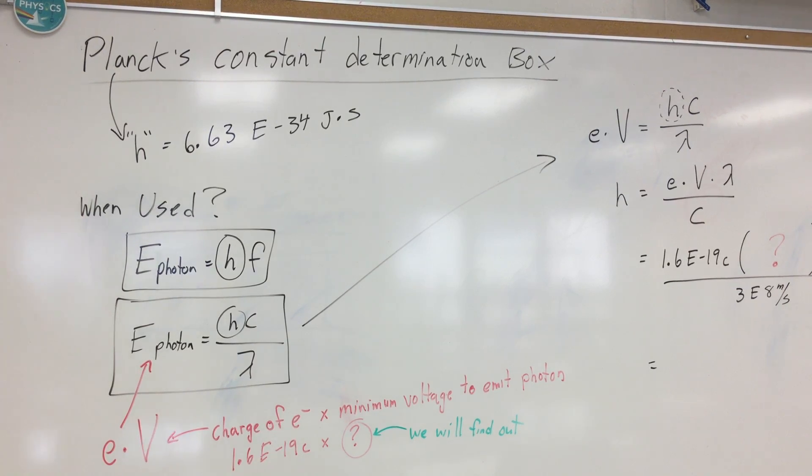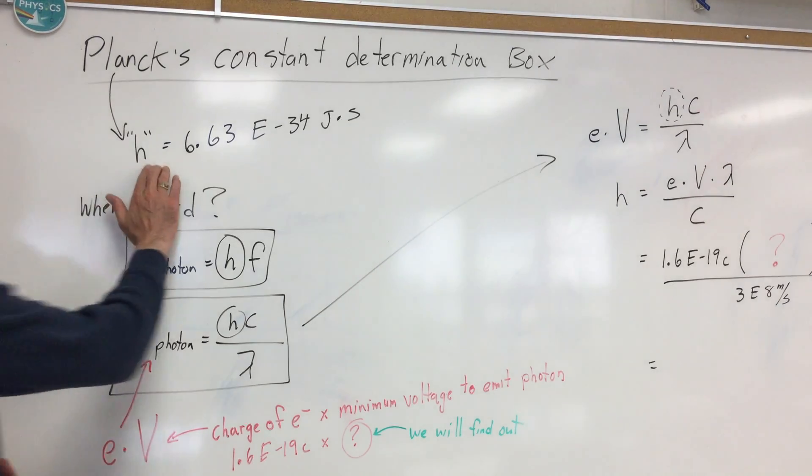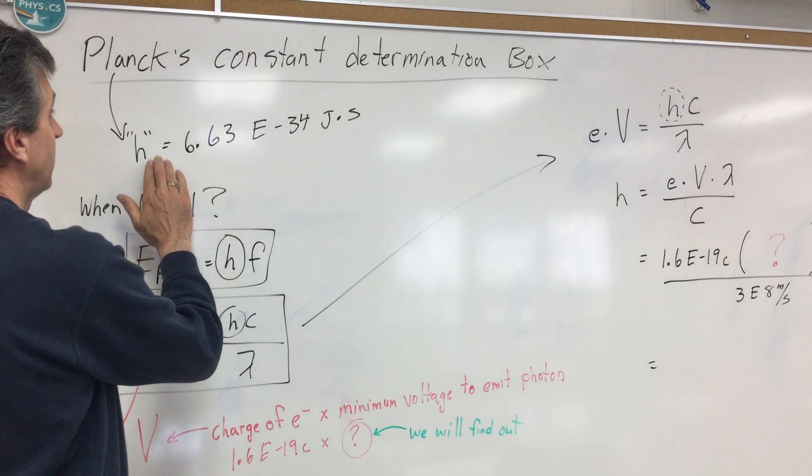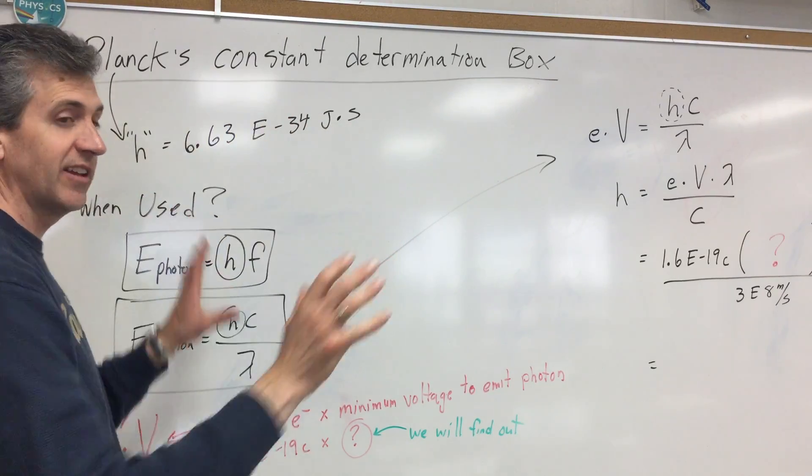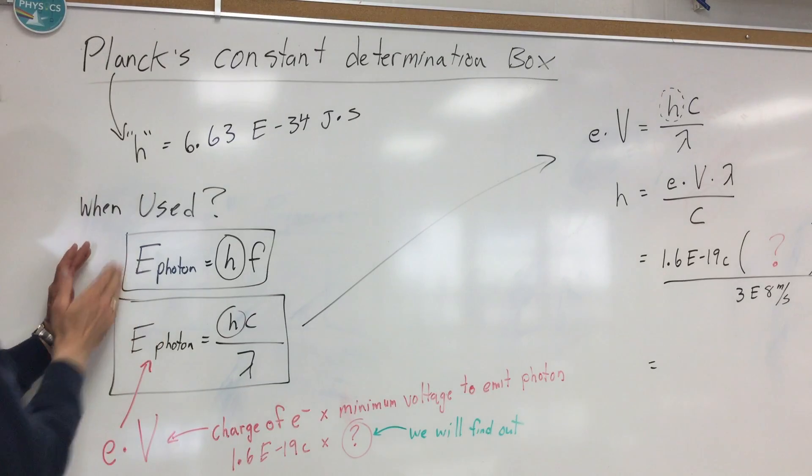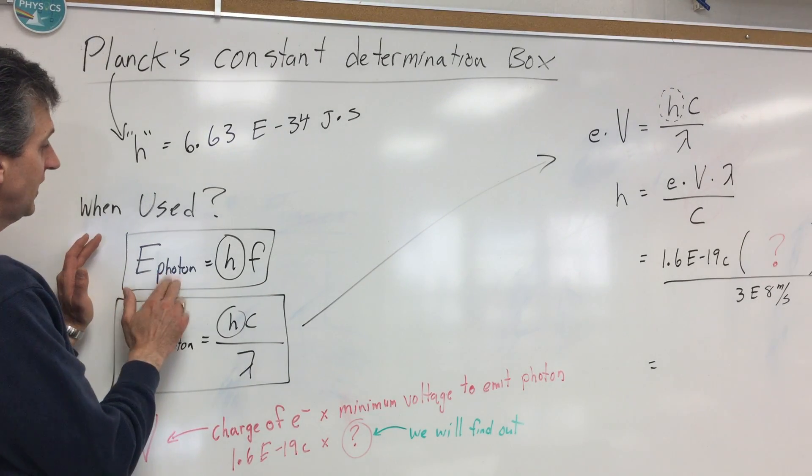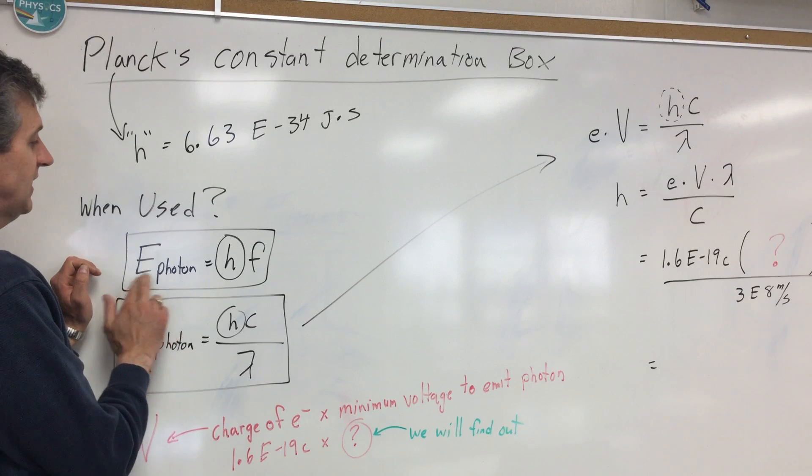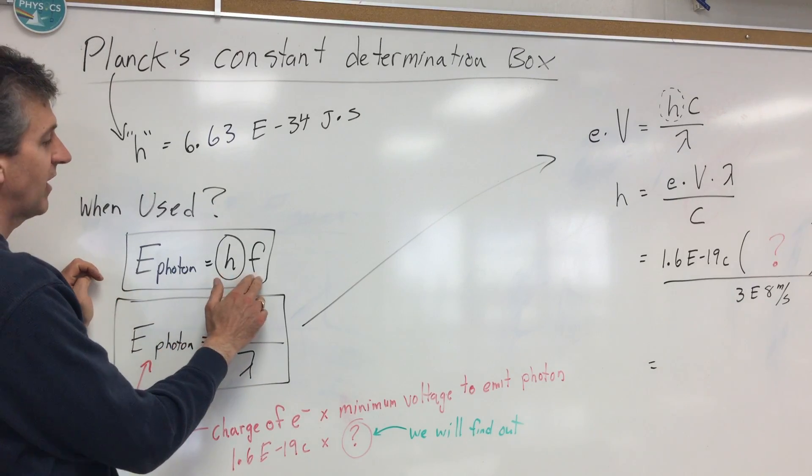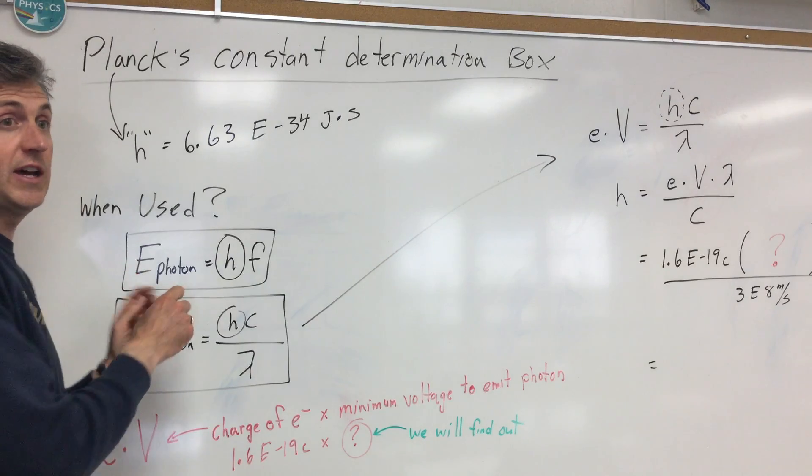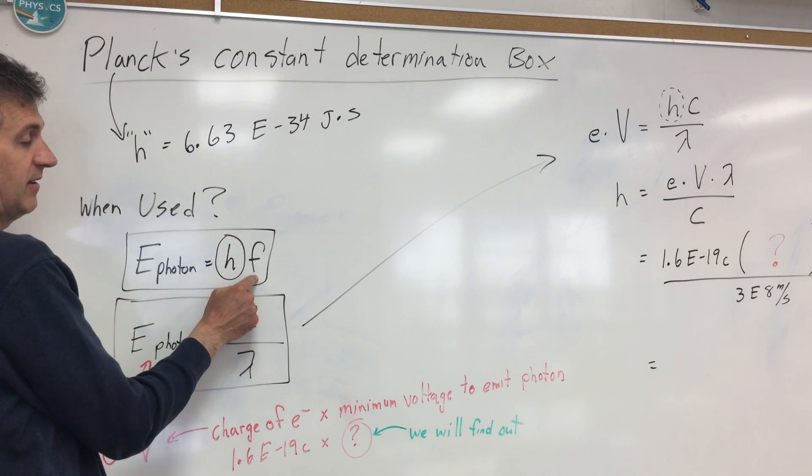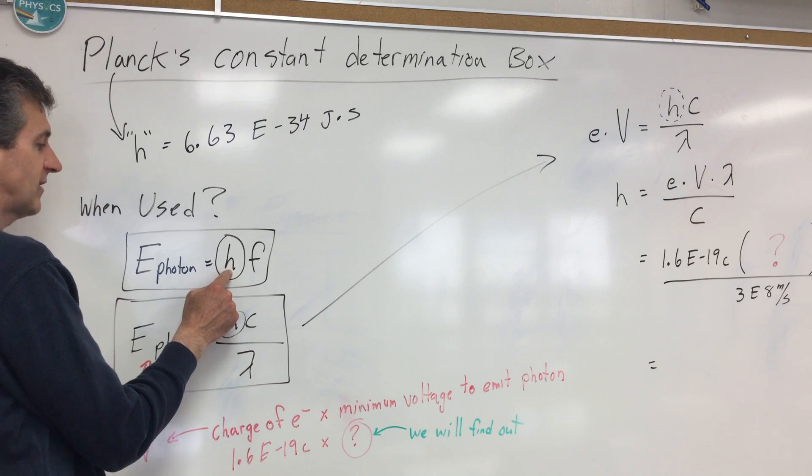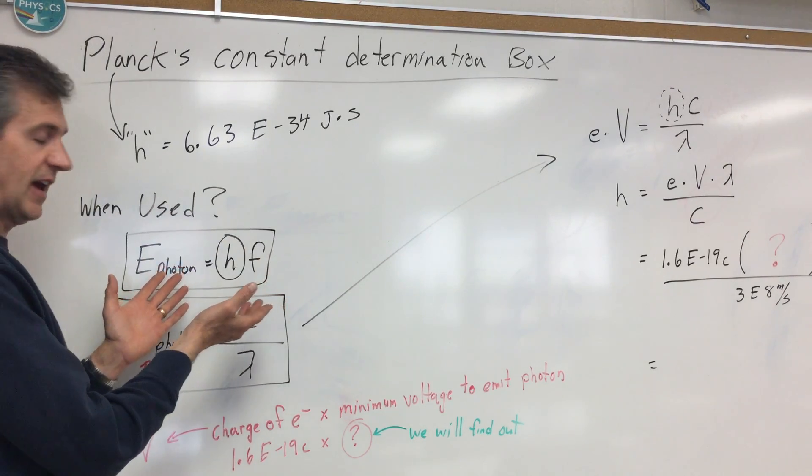So Planck's constant in the reference table, the physics reference table is 6.63 E negative 34 joules per second. It's a constant and we use it for the following two equations in Regents physics. We use it for E, energy of a photon, E is H times F. So if we know the frequency of a photon, remember photon means light, so if we know the frequency of the light and we times it by Planck's constant, it'll tell us, in joules, how much energy the light has.